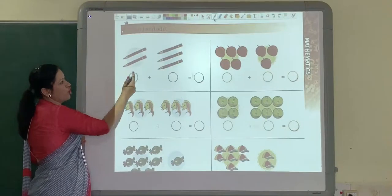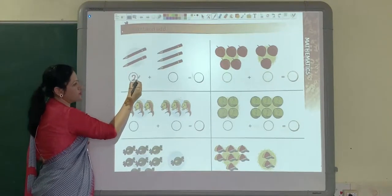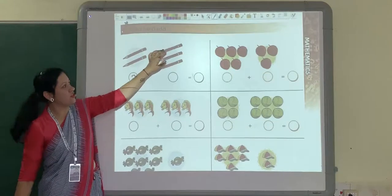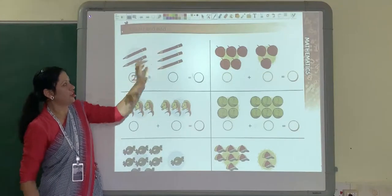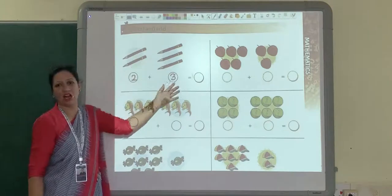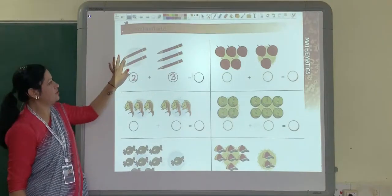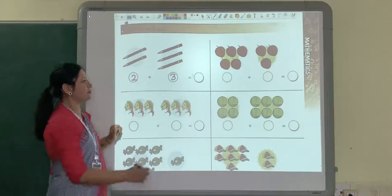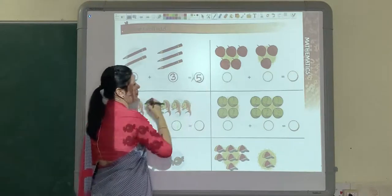1, 2. How many pencils? 2 pencils. So write here 2. Then here how many pencils? 1, 2, 3. So you will write here 3. Now all together make how many pencils? 1, 2, 3, 4, 5. All together make 5 pencils.